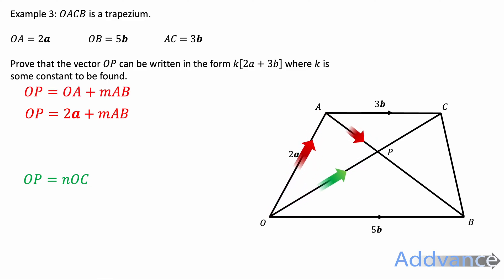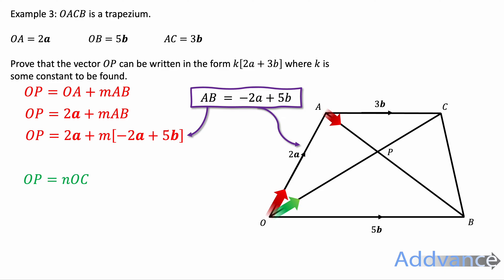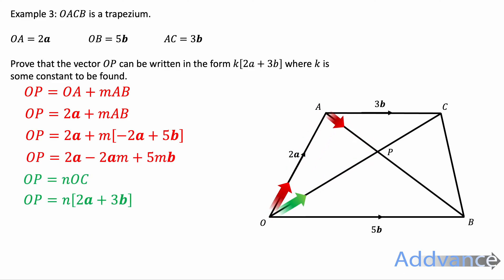And so we can start substituting this. O to A is 2a and A to B is minus 2a plus 5b. Now that's just the vector going from A to B is minus 2a plus 5b. We can then expand the brackets and we've got this expression for O to P. Now O to P going along the green path is n times 2a plus 3b. And we can expand the brackets like that.